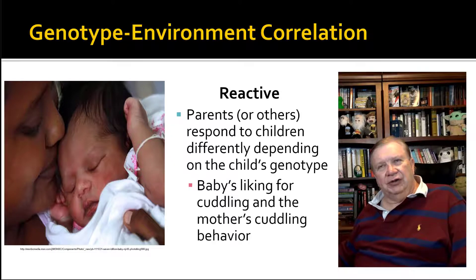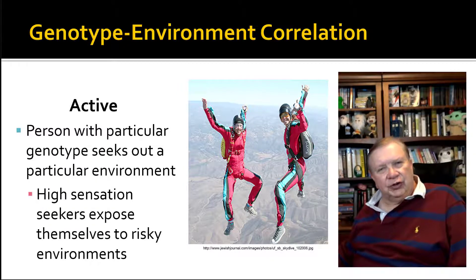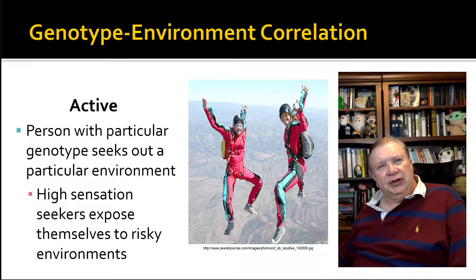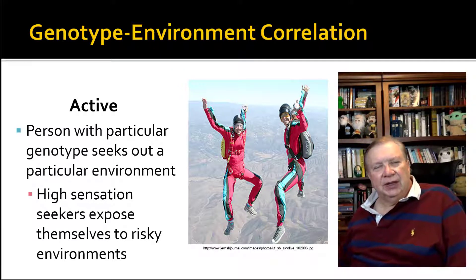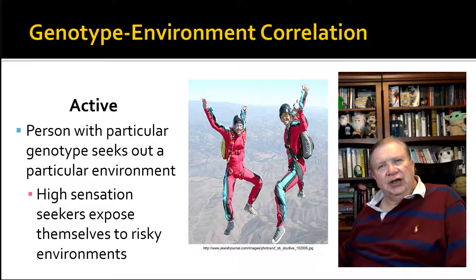The last type of GE correlation is active. If you remember back to our person-environment fit lecture, we talked about selection — and active GE correlation is very much like selection. Individuals with a certain genotype pick environments that fit with their genes. We're channeling our inner Marvin Zuckerman here, seeing a couple of individuals with big smiles on their faces while falling through the air with parachutes. They are most obviously sensation seekers, and we know there are genetic proclivities to being a sensation seeker.